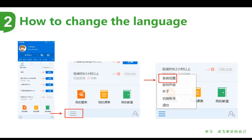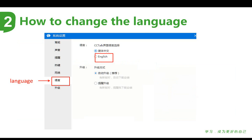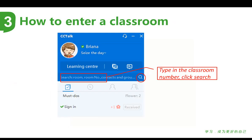After you log in, you will see an interface like the picture on the left. Then click the left corner as I have highlighted, and then click the first option you see. Then you will see an interface like this. Choose the last but one option, which means language. Click before English, then you will have an English version of CCTalk.